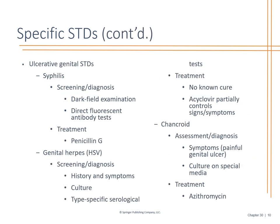For ulcerative genital STDs, syphilis requires screening, diagnosis, and fluorescent tests. If you are not comfortable managing this, refer them out to GYN specialists. The ultimate treatment for syphilis is penicillin G. Genital herpes is not curable — it is only treatable and we manage the symptoms. It is very important for the patient to understand this with any current and future partners. Acyclovir or valacyclovir (Valtrex) only controls signs and symptoms — it does not cure the infection.